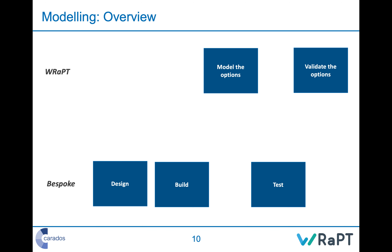Testing the model is a vital step. Even with WRAPT you should do a light check. With bespoke tools like Excel and Tableau, errors are far more likely so you really need to test thoroughly. You should do self-testing, then peer testing, then user testing and sign-off. Document what you expect to happen, document what actually happens, note any differences and changes made, and ensure there is sign-off at each stage.